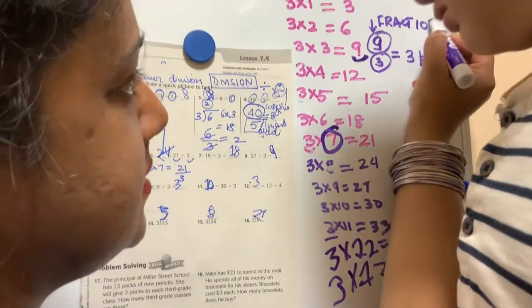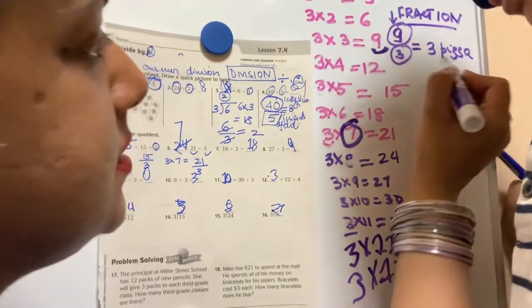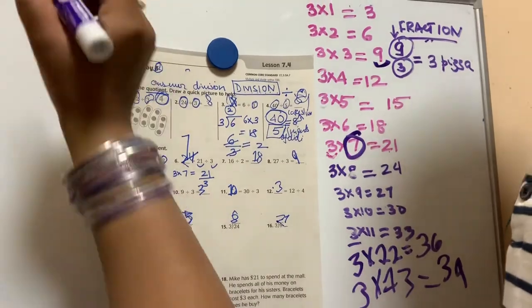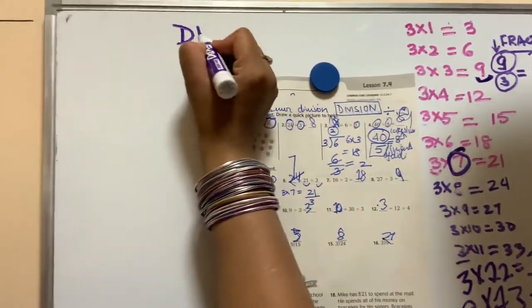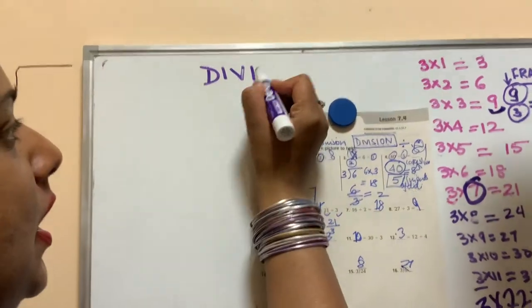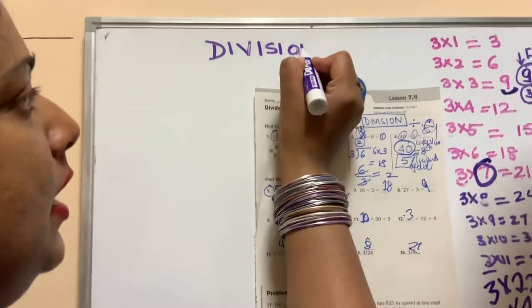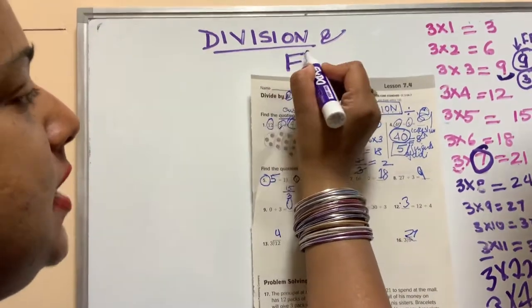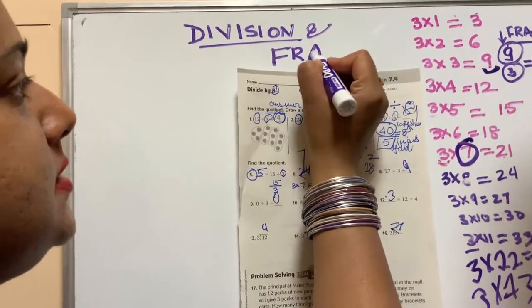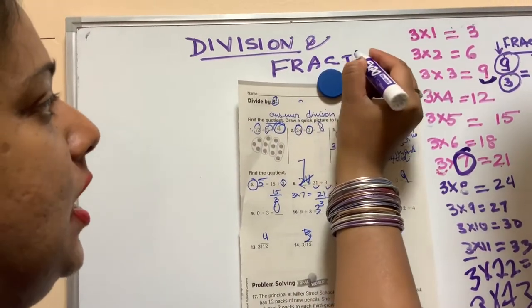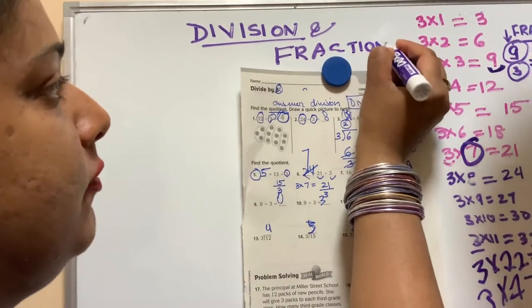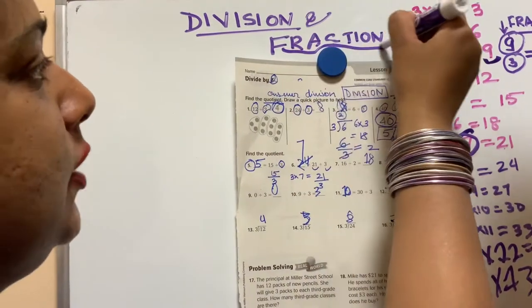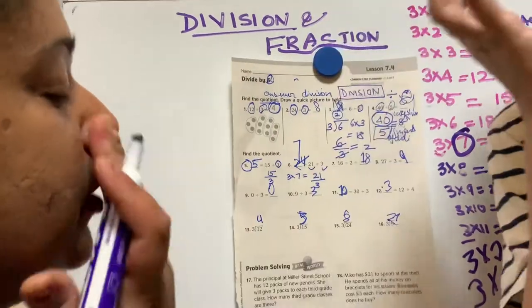Fraction, F-R-A-C-T-I-O-N. This is a new term you learned today, so the terms you learned today are division, D-I-V-I-S-I-O-N, and fractions, F-R-A-C-T-I-O-N. Fractions. You have to write down the title, you have to write down your name and date.